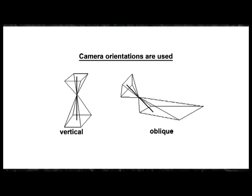Two types of camera orientations are used: vertical and oblique (or slant), as shown in the figure. Oblique allows one to take pictures of a large area, while vertical allows for less distortion in photo scale.